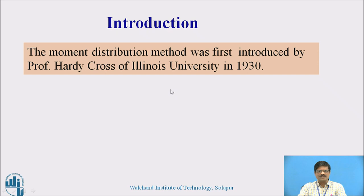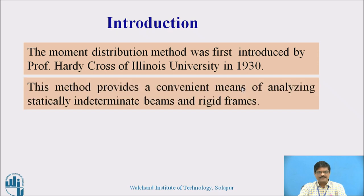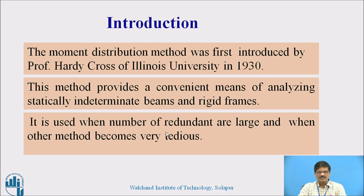Moment distribution method was first introduced by Professor Hardy Cross of Villeneuve University in 1930. Earlier, people used to struggle to solve complex problems with the available methods at that time. However, after the introduction of this moment distribution method, the analysis became easy. Since this method is very simple and quick, it became very popular after 1930. This method provides a convenient means of analyzing statically indeterminate beams and rigid frames. It was especially used when the number of redundants is large and other methods become very tedious.